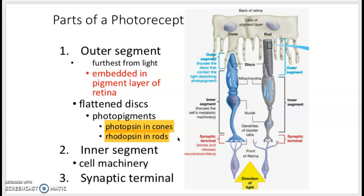The inner segment, this is where you'll see the mitochondria, the nuclei, all of that other stuff that keeps the cell functioning. And then at the end is the synaptic terminal that has the neurotransmitters that releases it to synapse and communicate with the bipolar cells.